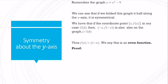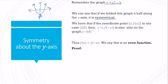Next, let's talk about symmetry about the y-axis. Consider the function y equals x squared minus 9 — this is a parabola. Parabolas are symmetric through their vertex, which is the lowest or highest point. If we folded this parabola in half along the y-axis, it's symmetrical, just like a butterfly. We have two x-intercepts: when x is 3, y is 0, and when x is negative 3, y is 0.